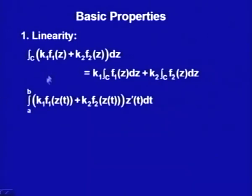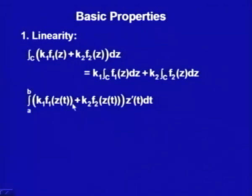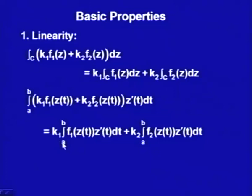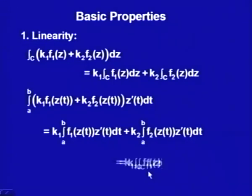Using the definition of the contour integral with parameterization z = z(t), t ∈ [a, b], we write the integral as ∫[k₁f₁(z(t)) + k₂f₂(z(t))]z'(t)dt. Separating into two integrals gives k₁∫f₁(z(t))z'(t)dt + k₂∫f₂(z(t))z'(t)dt, which is nothing but k₁ times the contour integral of f₁(z) plus k₂ times the contour integral of f₂(z). Thus linearity is established — the contour integral is a linear operator.